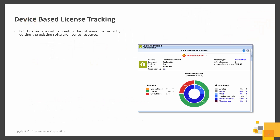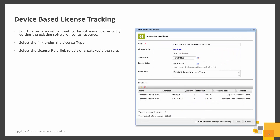You can edit the license rule while creating a software license or by editing an existing software license resource. Every license rule provides a set of configurable parameters to help calculate the license consumption. The license rule can be created or edited by selecting the link under the license type in the Software Product Summary view of a software product, then editing the specific license you want to modify. Once you are in the Edit Software License page, you can select the License Rule link to edit or create the rule.